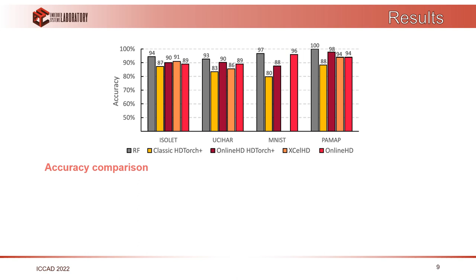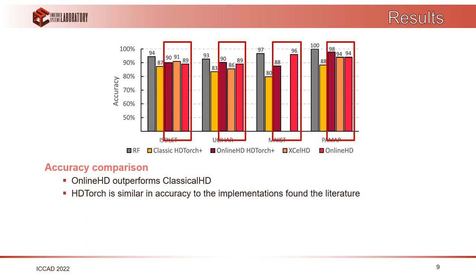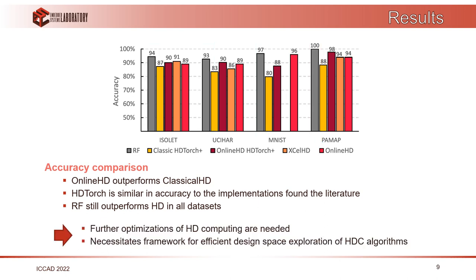We compare accuracies between random forest as our gold standard, online and classical HD learning with HDTorch Plus, and two state-of-the-art implementations — ExcelHD and online HD. We see that online HD outperforms classical HD, which was expected. Our HDTorch implementation has similar accuracy to the two implementations found in the literature. However, random forest outperforms hyperdimensional computing on all datasets, meaning further improvements to HD computing are needed.